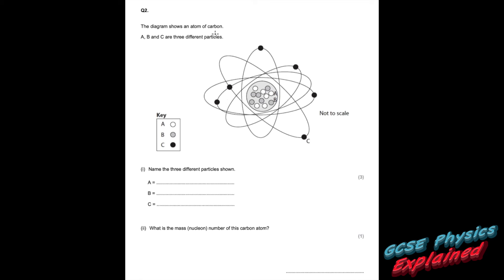Question two: the diagram shows an atom of carbon. A, B, and C are three different particles — name them. Carbon-12 has six on the bottom, so it has six protons. The top number is protons plus neutrons, so if it has six protons it must also have six neutrons. The protons and neutrons are in the nucleus in the middle. Counting the white ones: one, two, three, four, five, six.